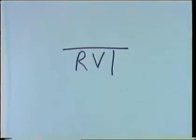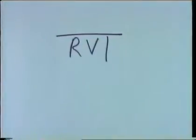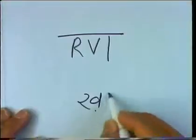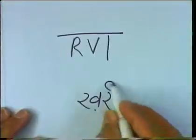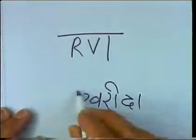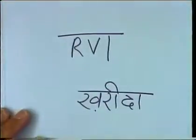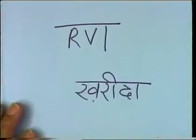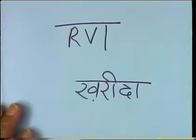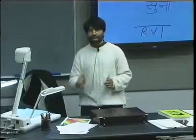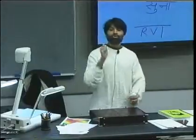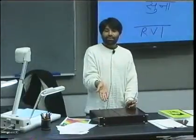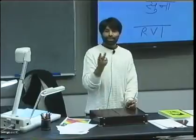Take 'kharid' and put 'da' after that — 'kharida'. 'Kharida' means 'bought'. That's all. Now sometimes the root verb already has 'da', so can you put two 'da's?